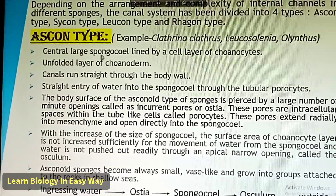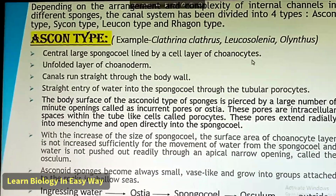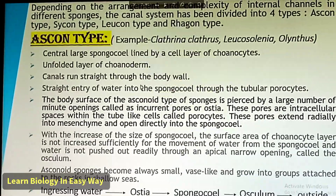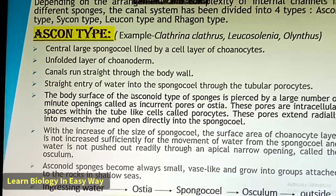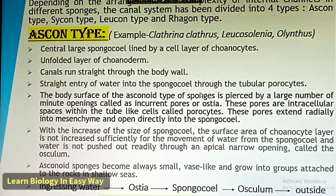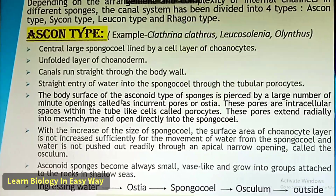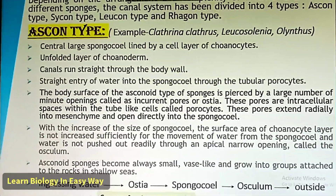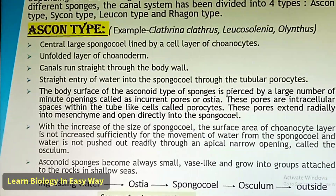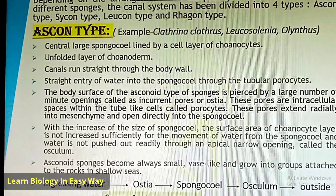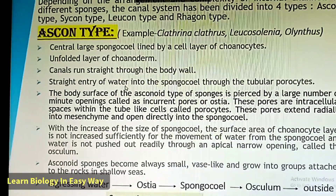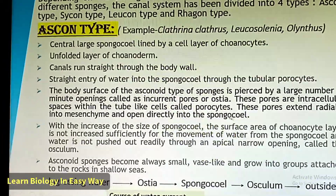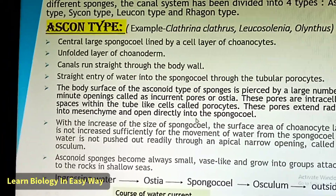Ascon type: Central large spongocoel lined by a cell layer of choanocytes, unfolded layer of choanoderm, canals run straight through the body wall, straight entry of water into the spongocoel through the tubular porocytes. The body surface of the asconoid type of sponges is pierced by a large number of minute openings called incurrent pores or ostia. These pores are intracellular spaces within the tube-like cells called porocytes, and these pores extend radially into mesenchyme and open directly into the spongocoel.